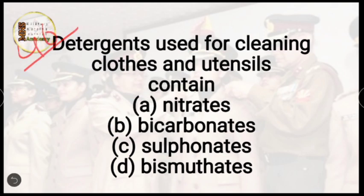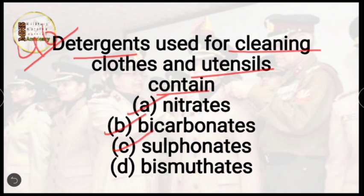Question number 46: detergent used for cleaning clothes and utensils contains — nitrates, bicarbonates, sulphonates, or bismuthates? The correct answer is option C, sulphonates.